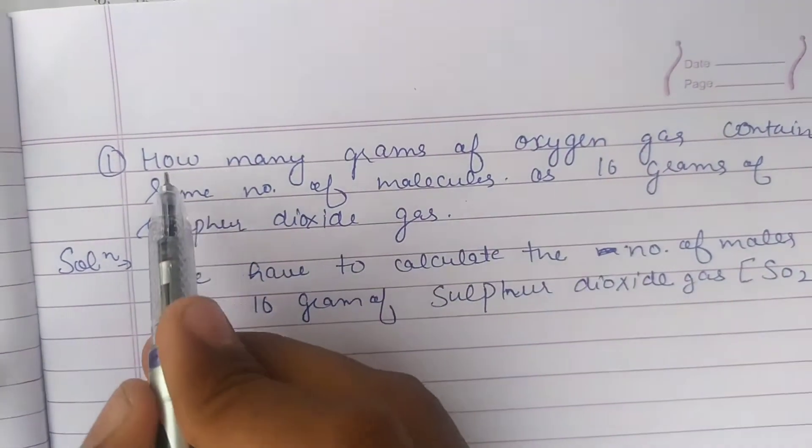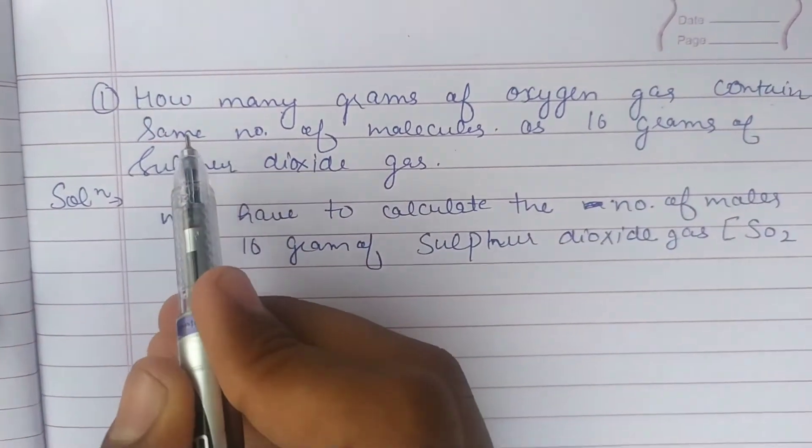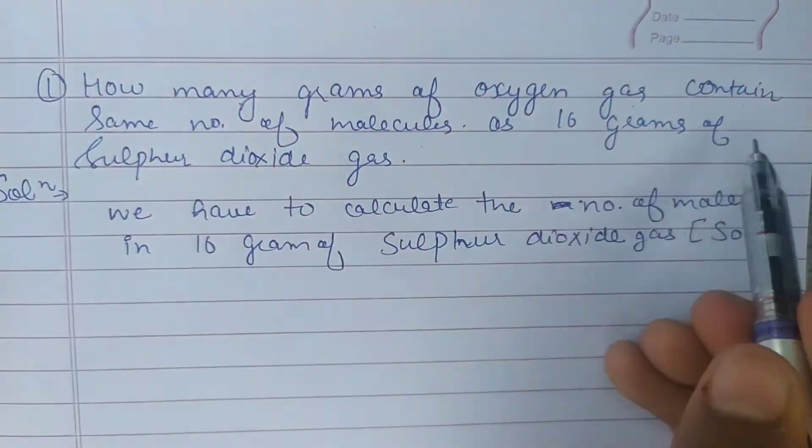Here the question is how many grams of oxygen gas contain the same number of molecules as 16 grams of sulfur dioxide?